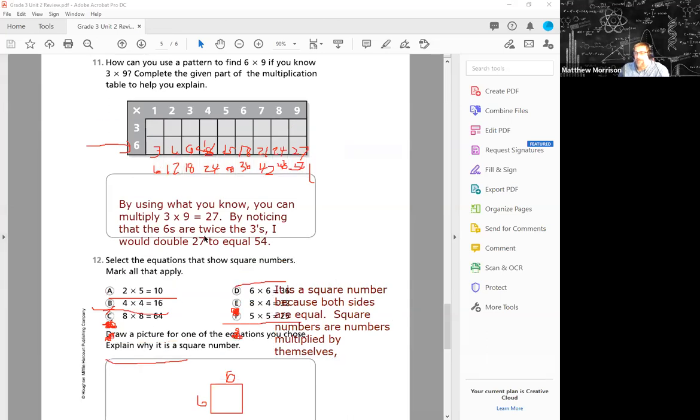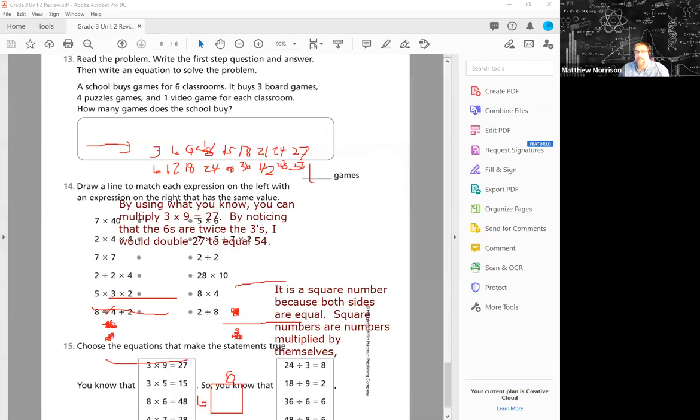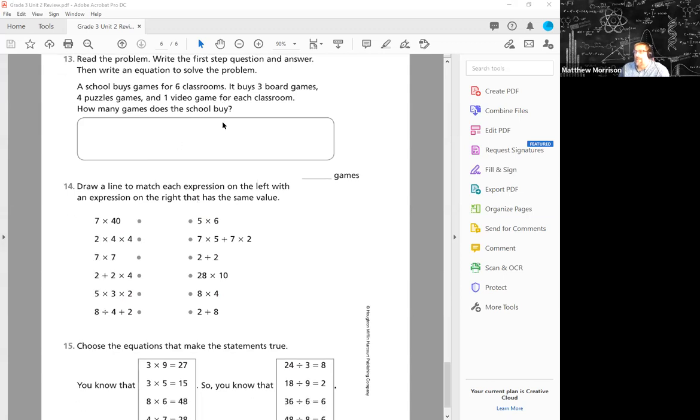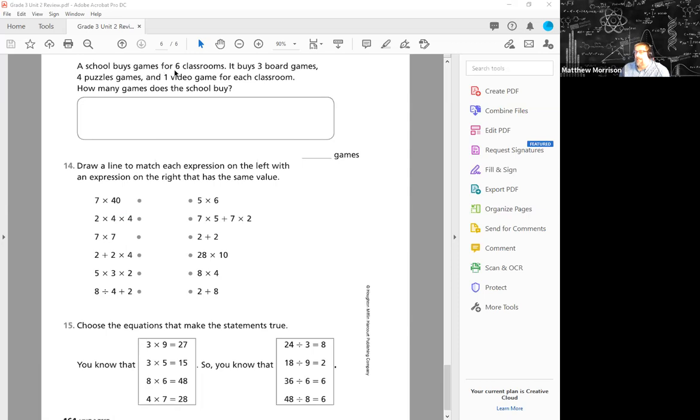Alright, coming in final page. Read the problem and then write the first step question and answer, then write the equation to solve the question. So a school buys games for six classrooms. It buys three board games, four puzzle games, and one video game for each classroom. How many games does the school buy? They kind of trick you here because the first piece of information is not really the first question. Make sure you understand the question. The question is: the first question is how many games for each class? So that's super important.